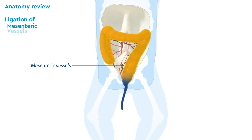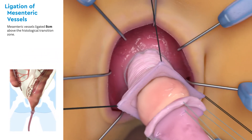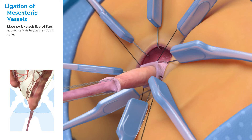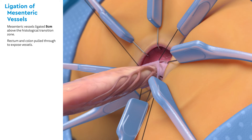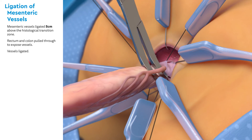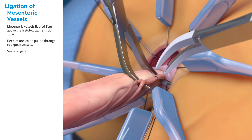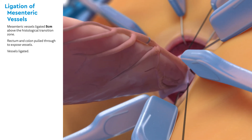In preparation for the colectomy, several mesenteric vessels must be ligated five centimeters above the histological transition zone. Traction is applied to pull the rectum and colon through, exposing the vessels. The vessels are ligated. Several more ligations may be necessary.